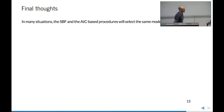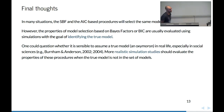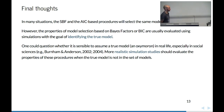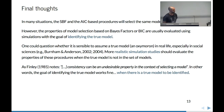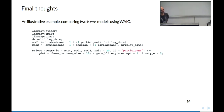So the take-home messages: we should be aware that in many situations both procedures will select the same model. But the properties of model selection based on Bayes factor or BIC are usually evaluated using simulations in which we try to identify the true model. We could question whether it is sensible to assume a true model in social or biological sciences. I would suggest using more realistic simulation studies in which we try to find not the true model — which does not exist — but the most useful model instead. As Finlay notes, consistency can sometimes be an undesirable property in the context of model selection. In other words, the goal of identifying the true model works fine only when there is a true model to be identified.